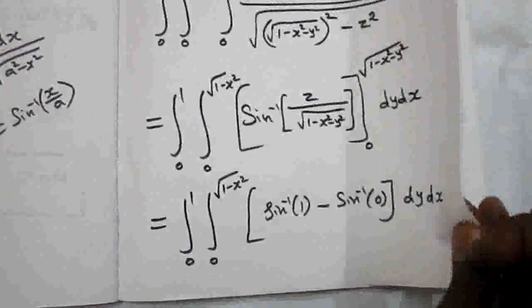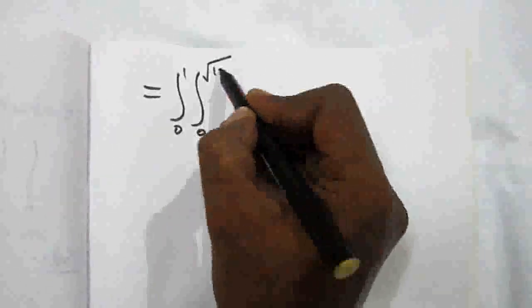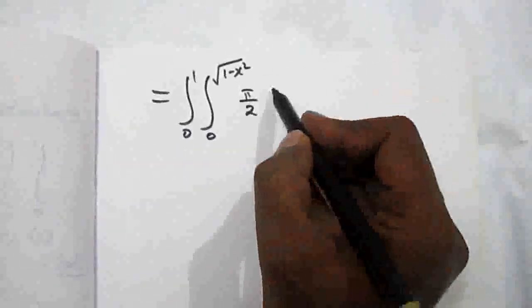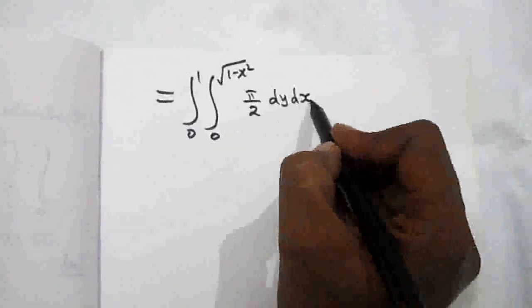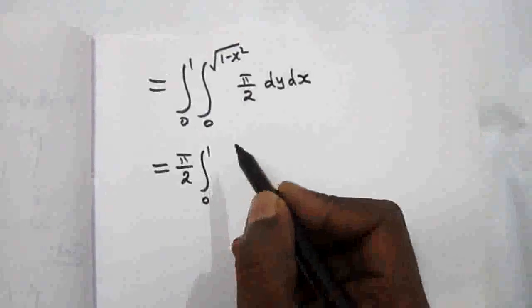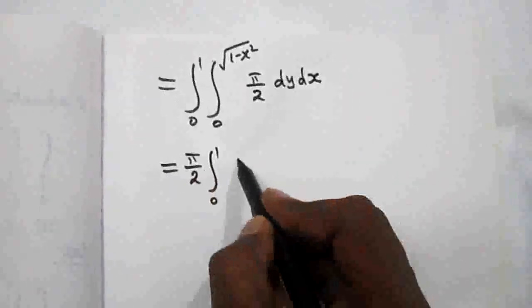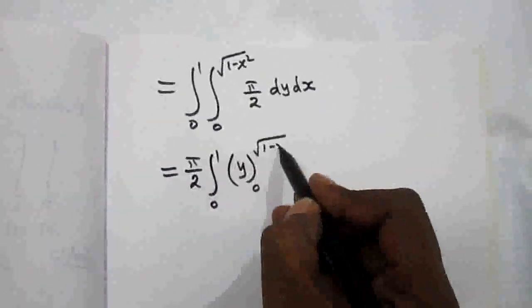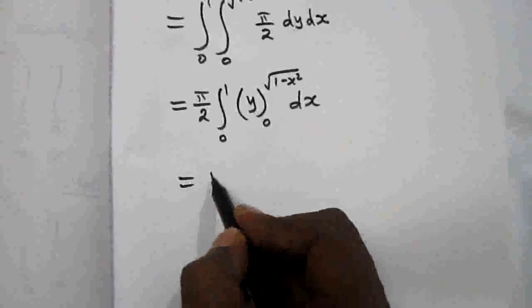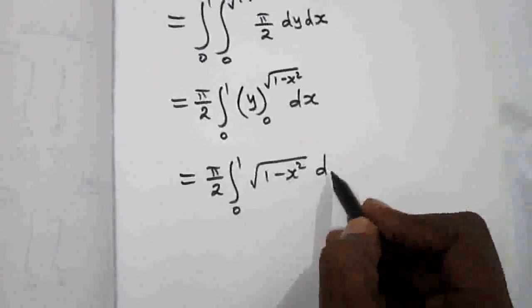Taking pi by 2 as a constant outside: integral 0 to 1, integration with respect to y. The integral of dy is y, with limit 0 to root of 1 minus x squared, then dx. Substituting the limit for y: upper limit gives root of 1 minus x squared, lower limit gives 0. So we have pi by 2 times integral from 0 to 1 of root of 1 minus x squared dx.